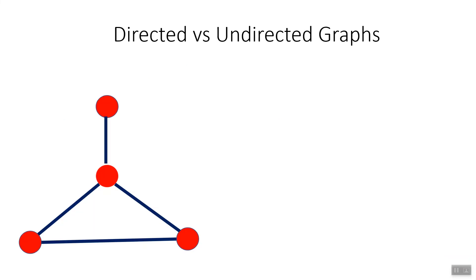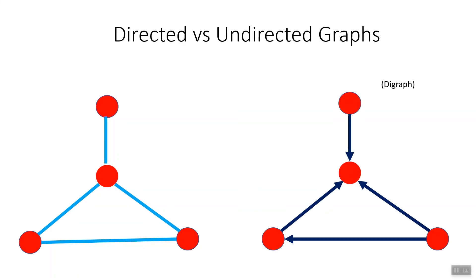We can divide graphs into two broad categories: undirected and directed. In an undirected graph, such as the one below, edges have no direction associated with them. However, in a directed graph, or a digraph, edges also have a direction represented by arrows.